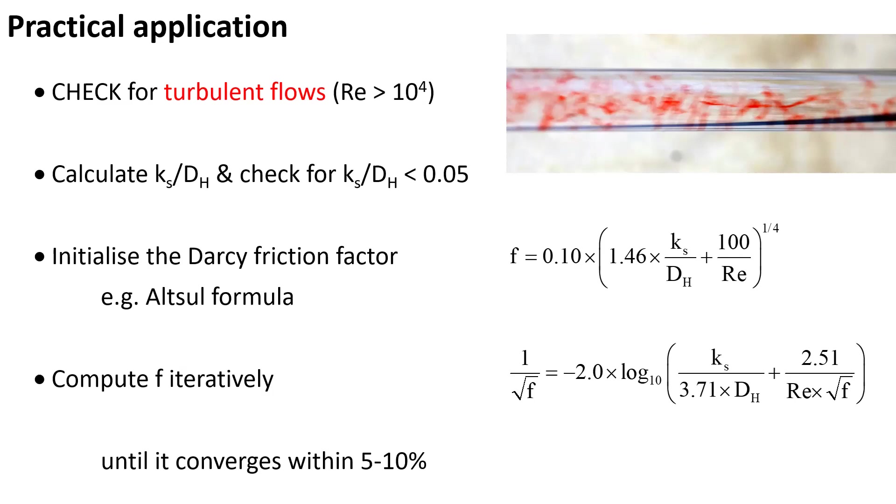Next, we initialize the Darcy-Weisbach friction factor, for example, using an explicit expression such as the Altshul formula shown here. Then we compute iteratively the Darcy-Weisbach friction factor, where we use the output of an iteration as input of the next iteration, until the difference between the input and output in terms of the Darcy-Weisbach friction factor is within 5 to 10 percent.